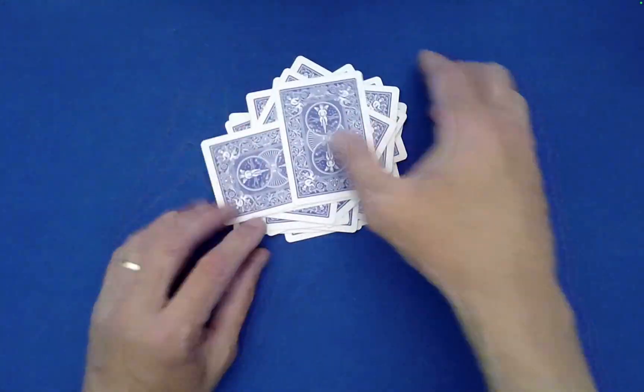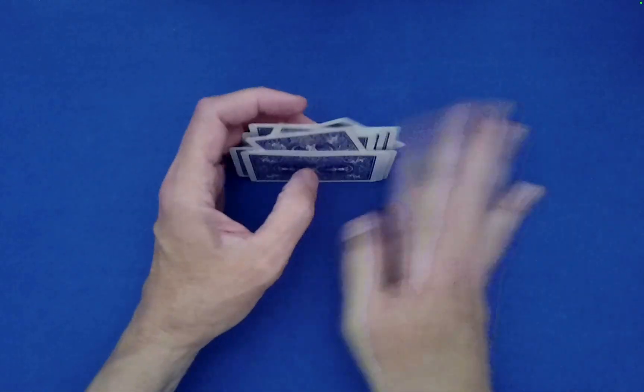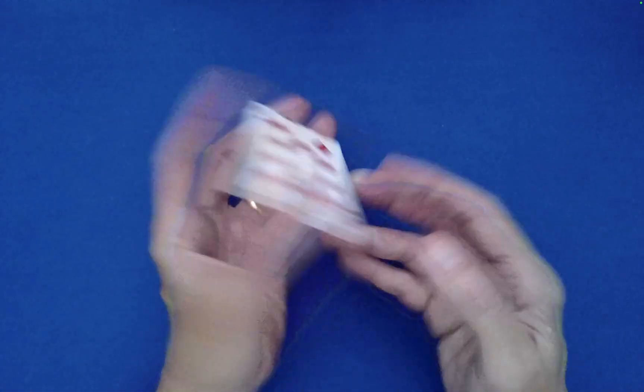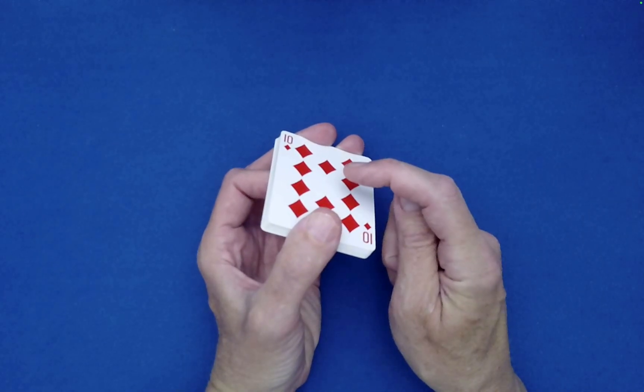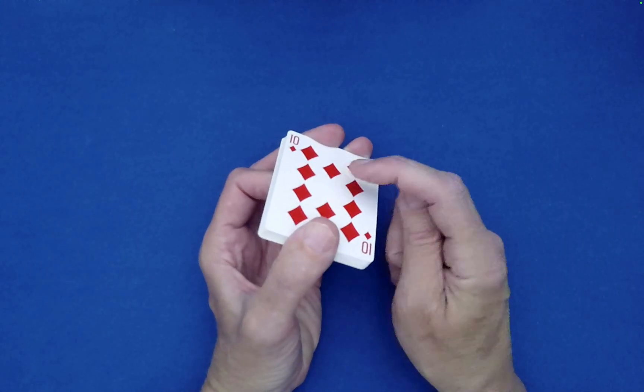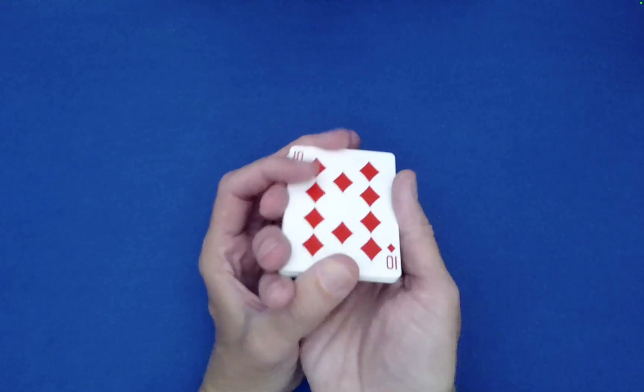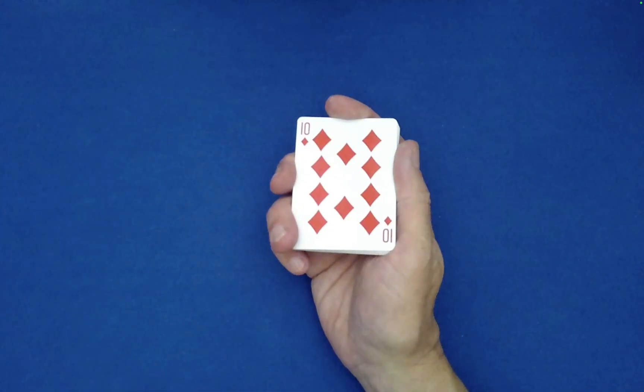So we have 18 here which is great. Now what you need to do is have the spectator make note of the identity of the bottom card, which was randomly arrived at of course. The card for them to remember is the 10 of diamonds.